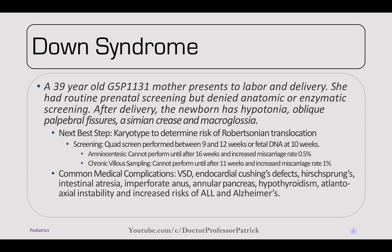Anyone above 35 is considered advanced gestational age. The next best step to confirm would be a karyotype, or if this is familial inheritance, look at a Robertsonian translocation. You can screen for Down syndrome with the quad screen performed between 9 and 12 weeks, which involves an ultrasound as well as different enzymatic levels. You can also do fetal DNA now at 10 weeks.